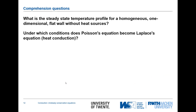This is nearly the end of the video. The first comprehension question: what is the steady-state temperature profile for a homogeneous one-dimensional flat wall without heat sources? The answer is a linear profile, from integrating 0 = d²T/dx² twice. The second question: under which conditions does the Poisson equation become the Laplace equation? The difference is the volumetric heat generation — absent in the Laplace equation but present in the Poisson equation. Thank you for your attention and see you in the next video.